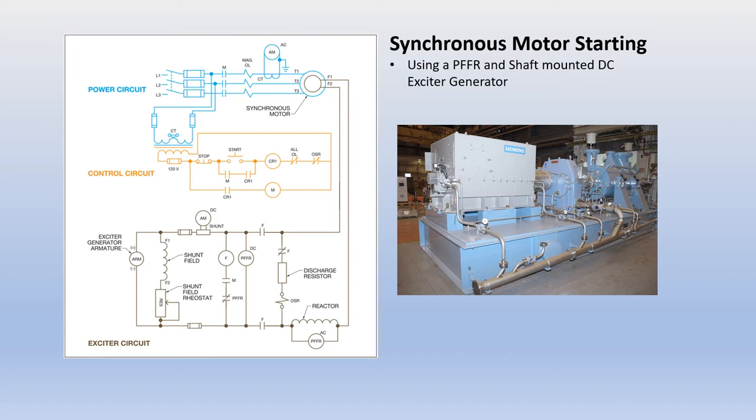This video is to help explain the starting sequence of a synchronous AC three-phase motor. This example uses a motor shaft-mounted DC exciter generator with a control circuit using a polarized field frequency relay and an out-of-step relay. These relays help control the application of the DC excitation when the motor approaches and runs at synchronous speed.